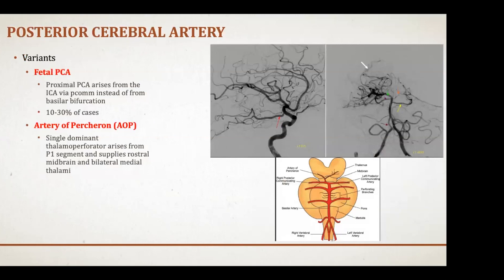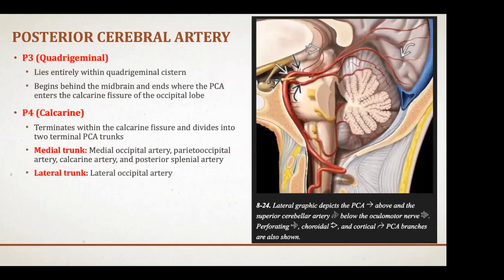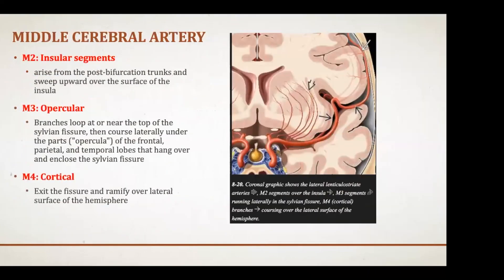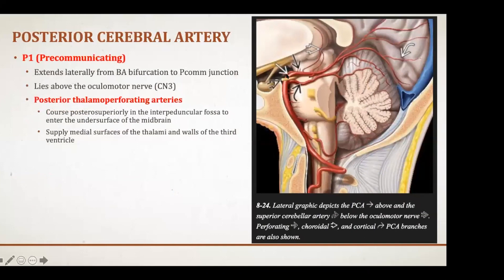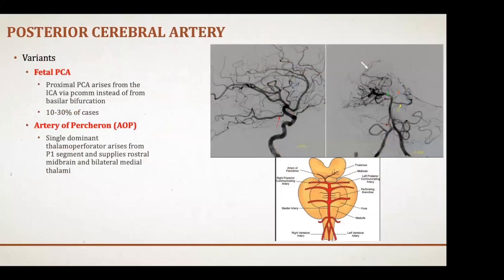There are important variants of the posterior cerebral artery. The fetal PCA is the variant where the proximal PCA arises from the ICA via the posterior communicating artery instead of from the basilar bifurcation. On this lateral ICA angiogram, you can see a very large posterior communicating artery — this is the fetal PCA variant where the fetal circulation is preserved and the PCOM supplies the PCA circulation.